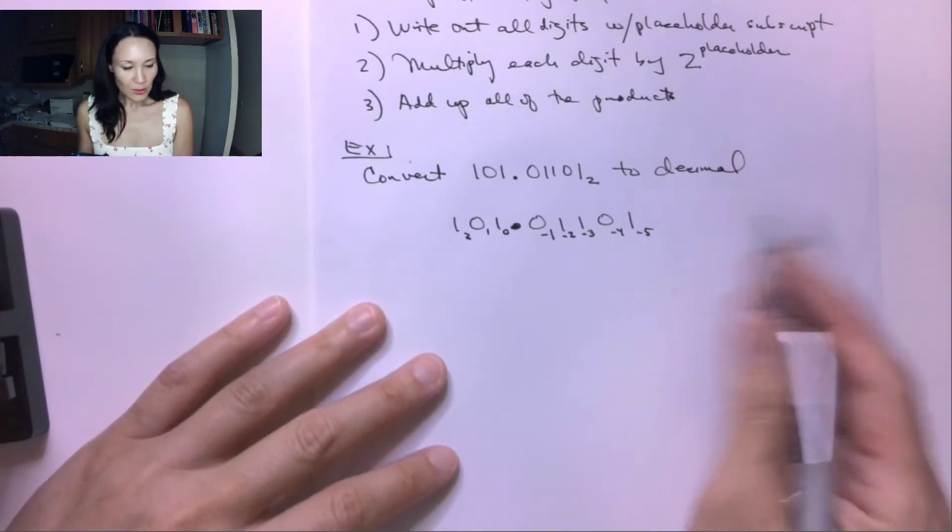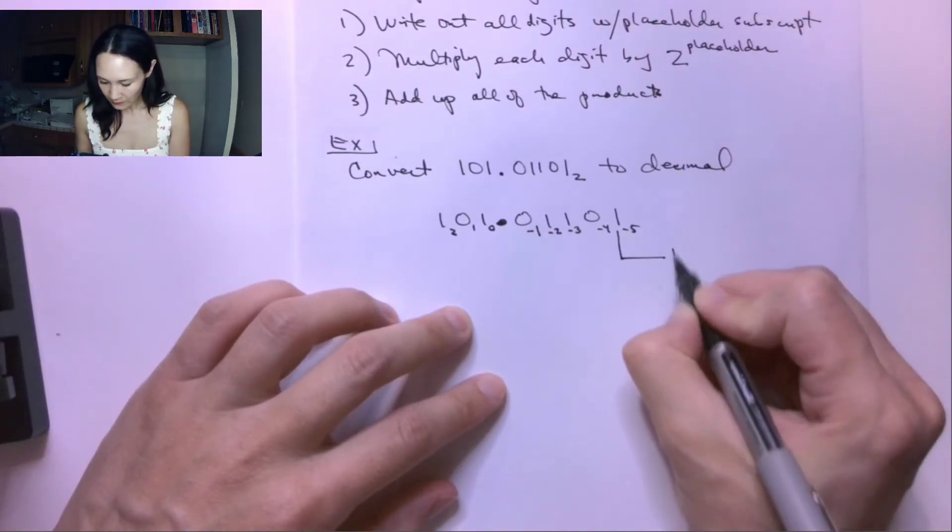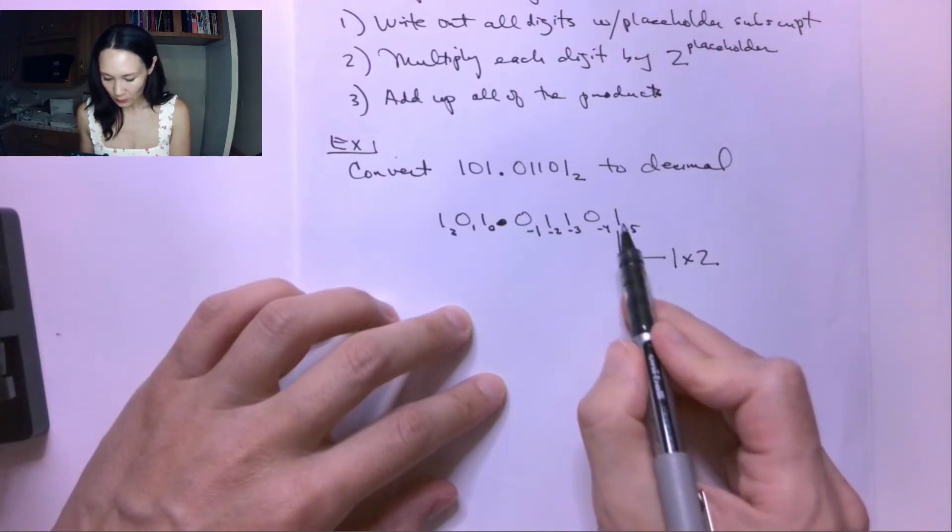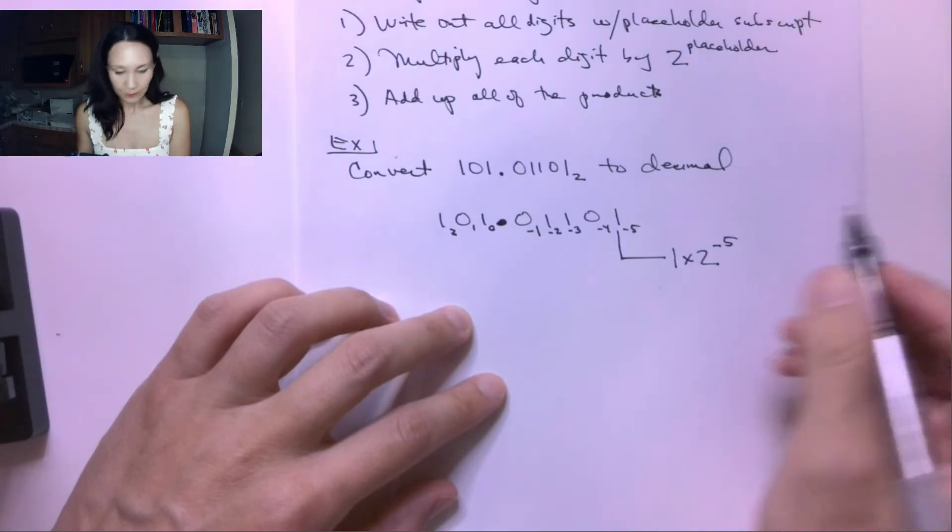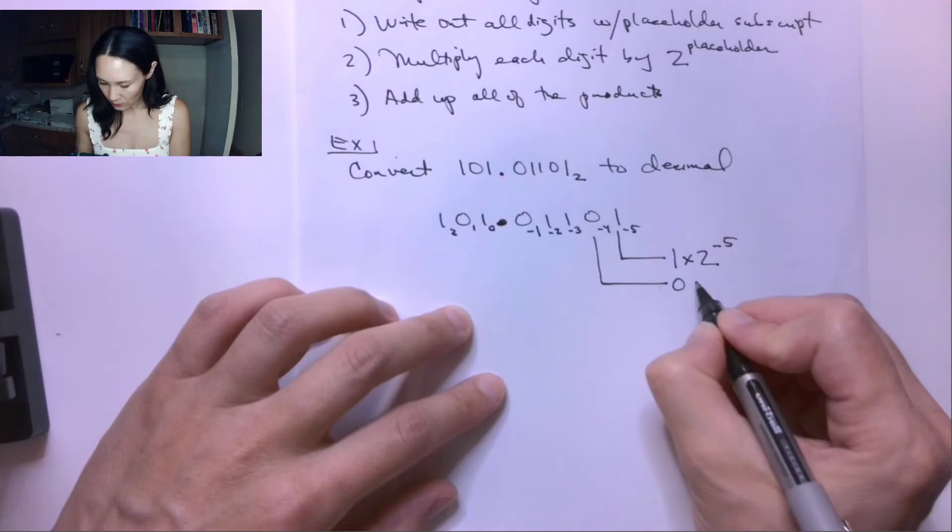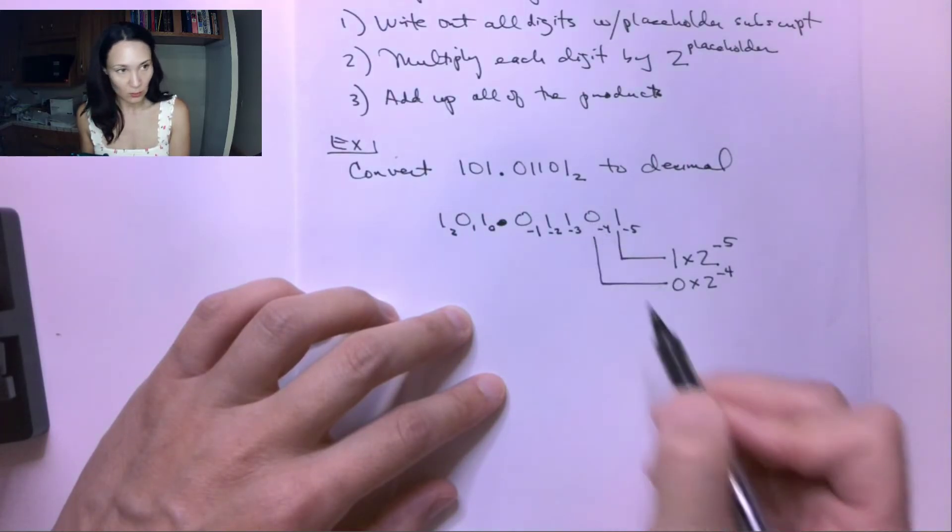Now step number 2 is we take these digits, so this is 1, and we multiply it by 2 raised to the subscript that's on the 1. So that subscript is negative 5. We do this to the next one. The next digit is 0, so 0 times 2 to the negative 4, because negative 4 is the subscript on the 0.